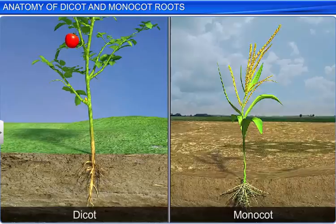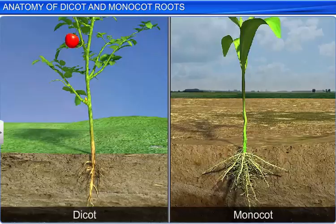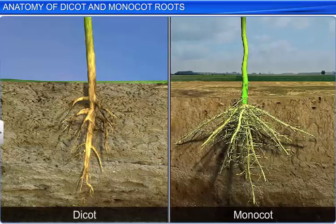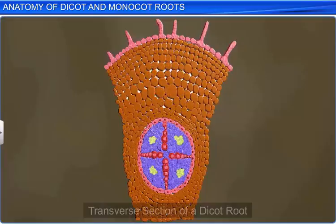The root is one of the key organs that helps distinguish between a dicot and a monocot plant. Let's observe the transverse section of the matured zone of roots to understand their internal structure. We'll begin by studying the anatomy of a dicot root.